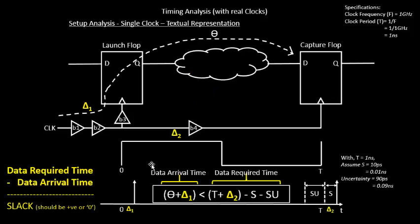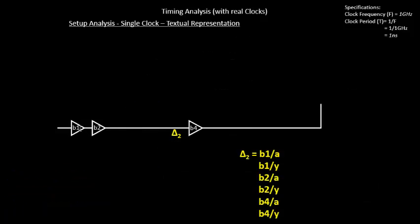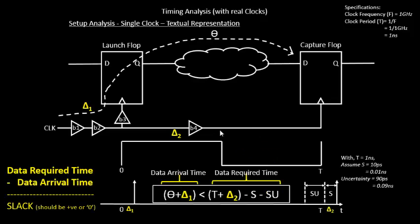Similarly, the capture clock will be represented as: B1 of A (net delay), B1 of Y (cell delay), B2 of A (net delay), B2 of Y (cell delay), B4 of A (the larger net delay on the capture path), and B4 of Y (the cell delay of buffer B4). The remaining net delay to the capture flop's clock pin will be accounted for in that flop's section.